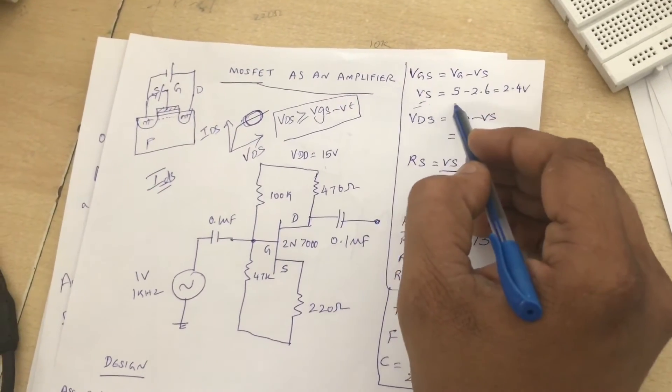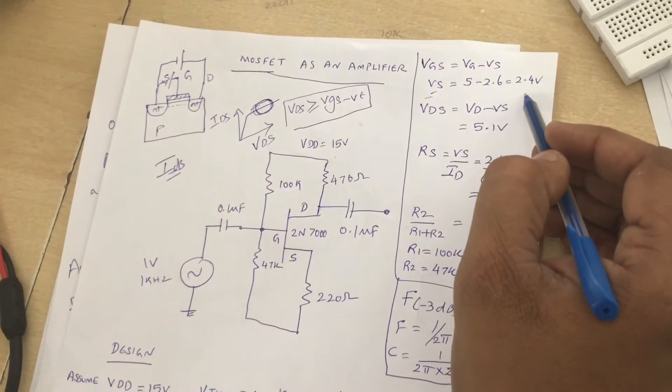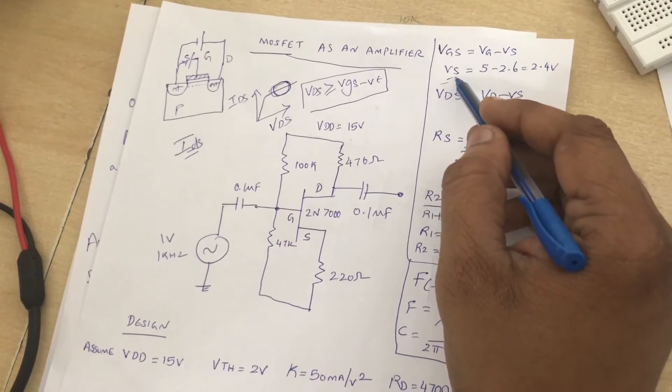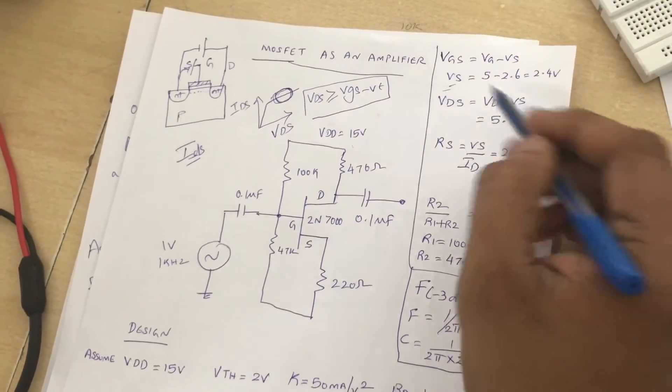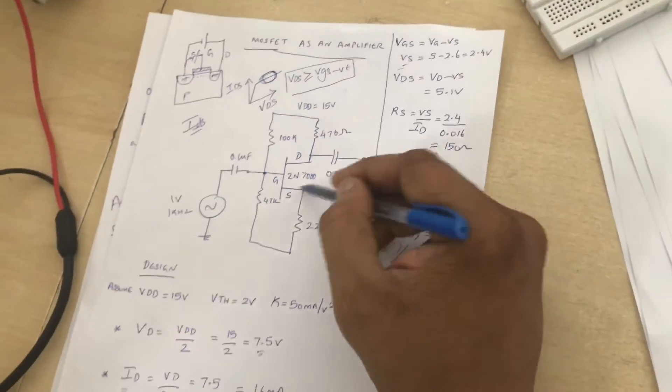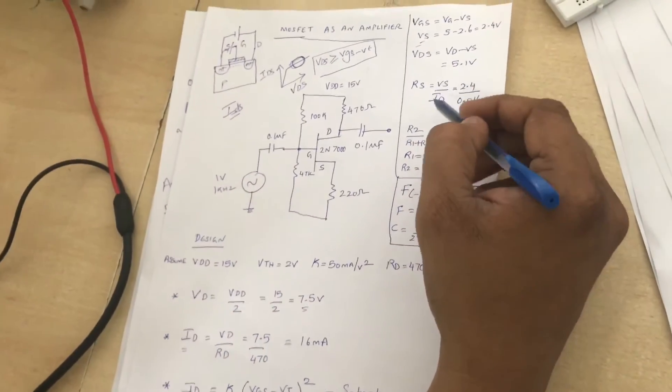And also we can calculate VDS. Since we know VS and VD, we calculate VD minus VS. From this we can calculate the source resistance value, RS equals VS by ID, which is around 150 ohms. If 150 ohm is not available, you can use a 220 ohm resistor.